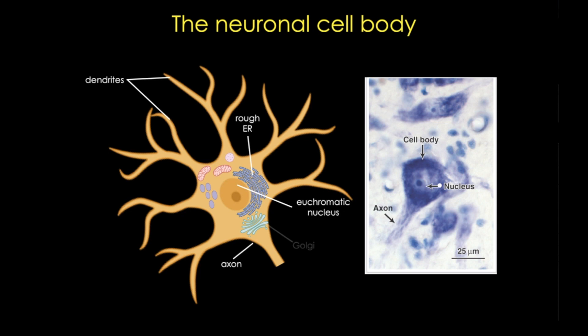the cell body is packed with rough endoplasmic reticulum, active Golgi, and lots and lots of Nissel substance or bodies. And you can see in the Nissel-stained image on the right that really only the cell body is staining darkly.